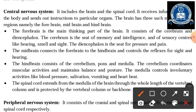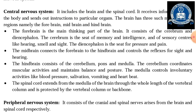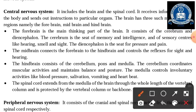Hello friends, welcome to the classes of Virgin Mary Higher Secondary School. Today we are going to start the nervous system — the central nervous system of class 10 science, chapter number 7. The central nervous system consists of the brain and spinal cord, which receives information from the body and sends instructions to particular organs.